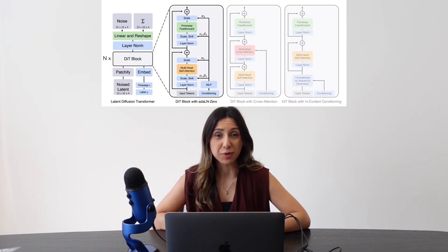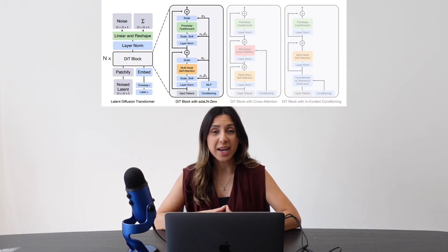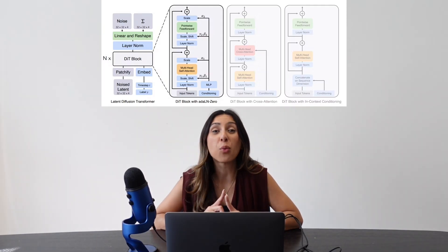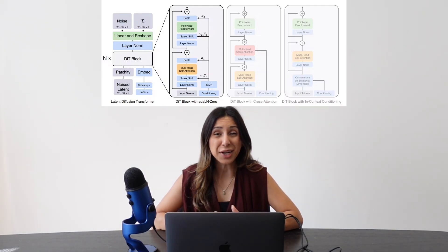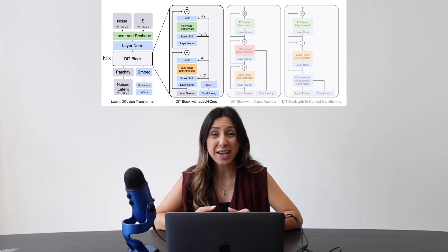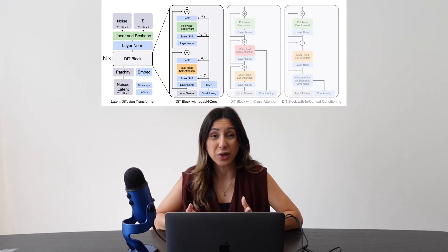Diffusion Transformers are a new class of generative models developed by researchers at NYU and UC Berkeley. They work like traditional diffusion models, starting with random noise and gradually turning it into a realistic image — but with one key upgrade. Instead of a UNet backbone, DITs use Transformer architecture. This shift means better handling of global patterns and data, improved scalability, and in many cases, higher quality outputs.